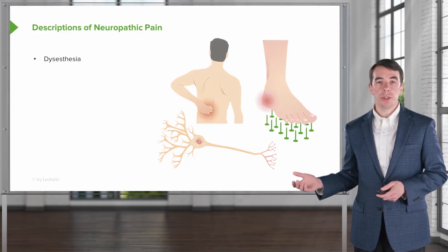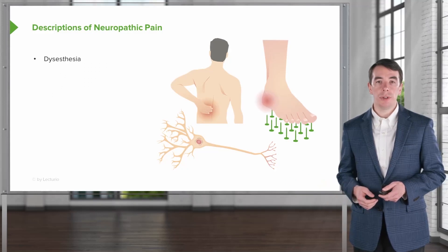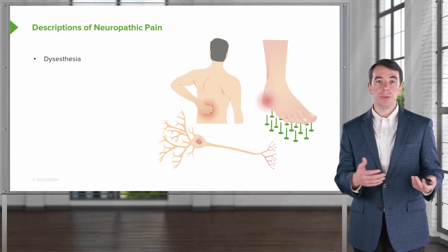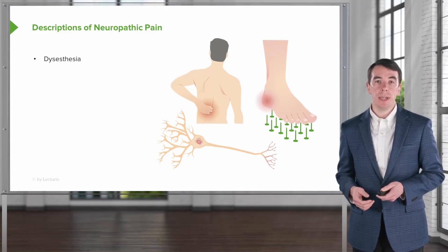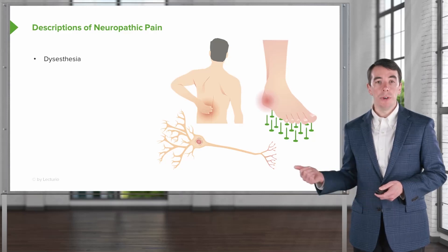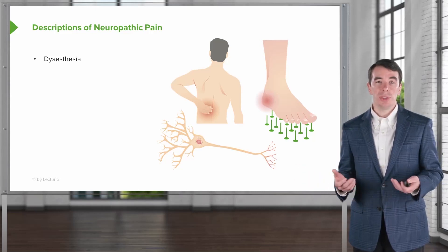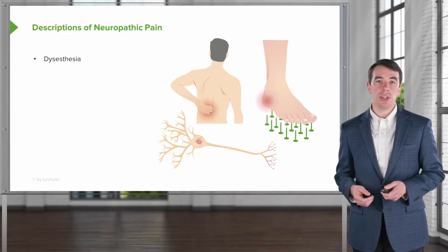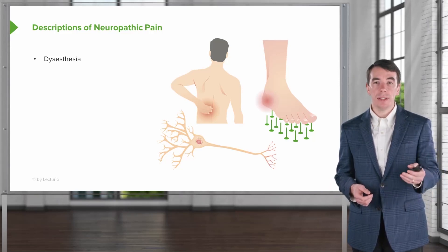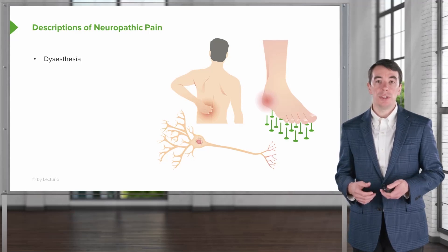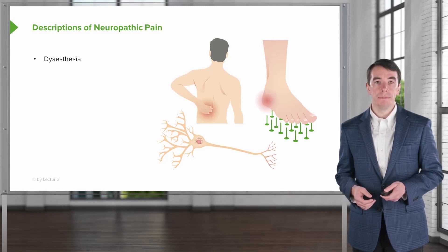Let's start with some descriptions of neuropathic pain — what medical words do we use to describe patient symptoms. First is dysesthesia, which just means any abnormal sensation. This may be numbness, tingling, burning, or electric shock type sensations. Those are dysesthetic descriptions of pain.